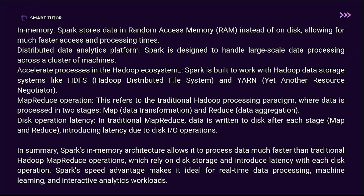The MapReduce operation is a traditional Hadoop process with two stages of data processing: the Map stage for data transformation and the Reduce stage for data aggregation. The data is written back to disk after each stage, introducing latency due to disk I/O operations.